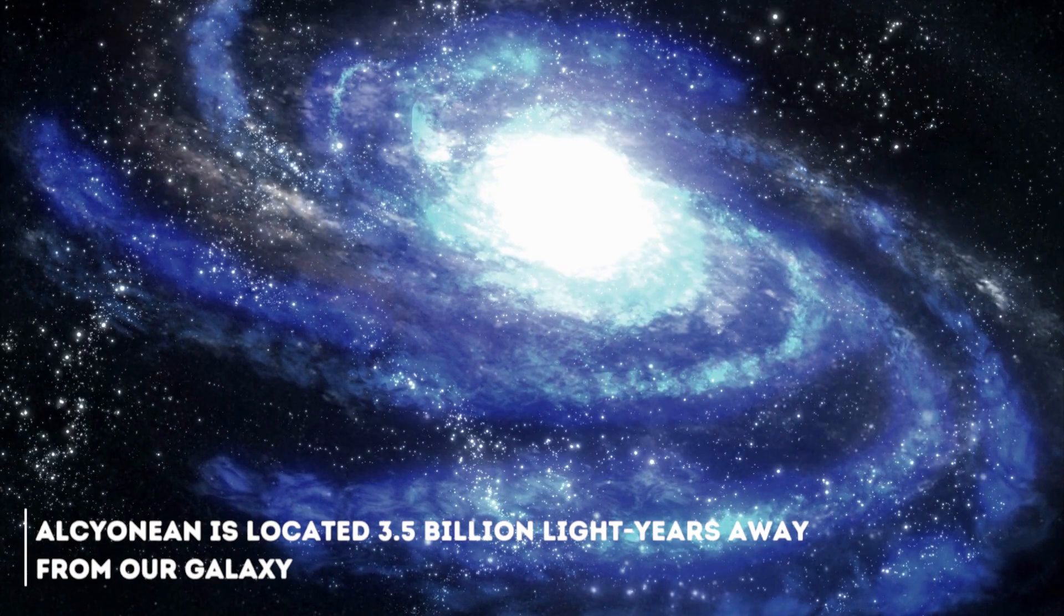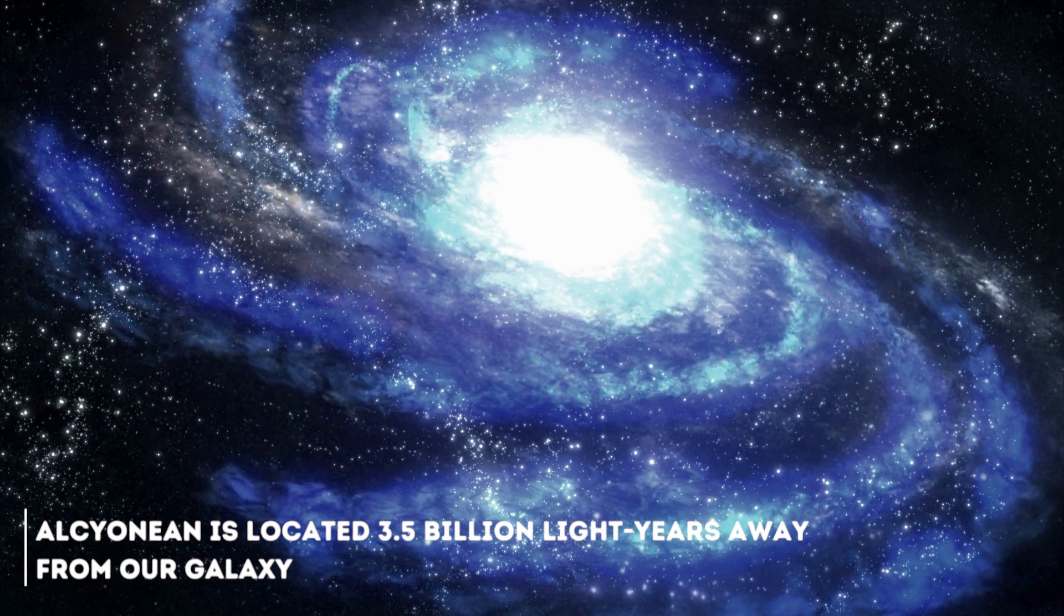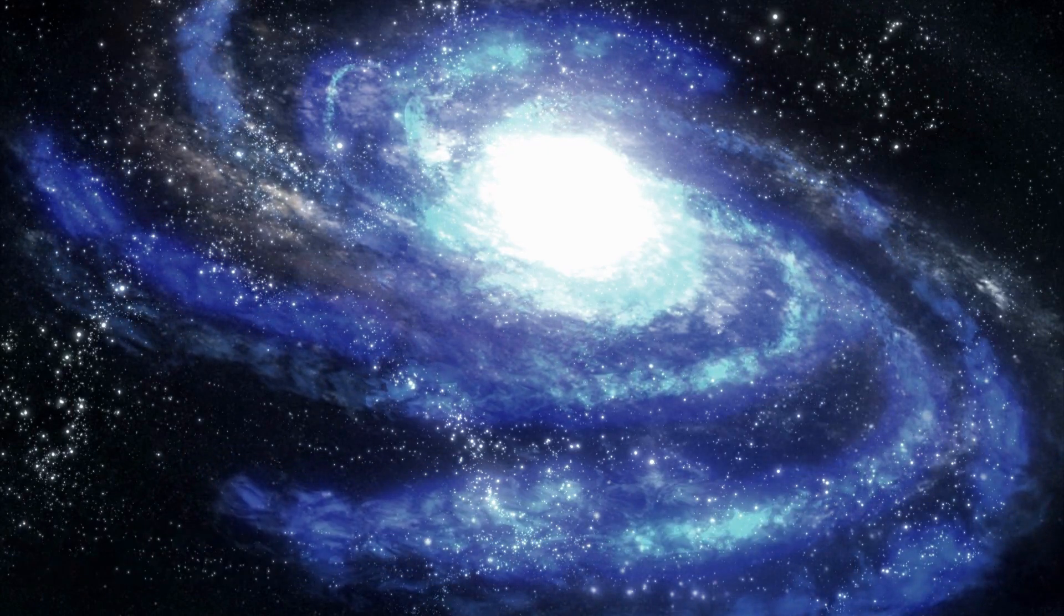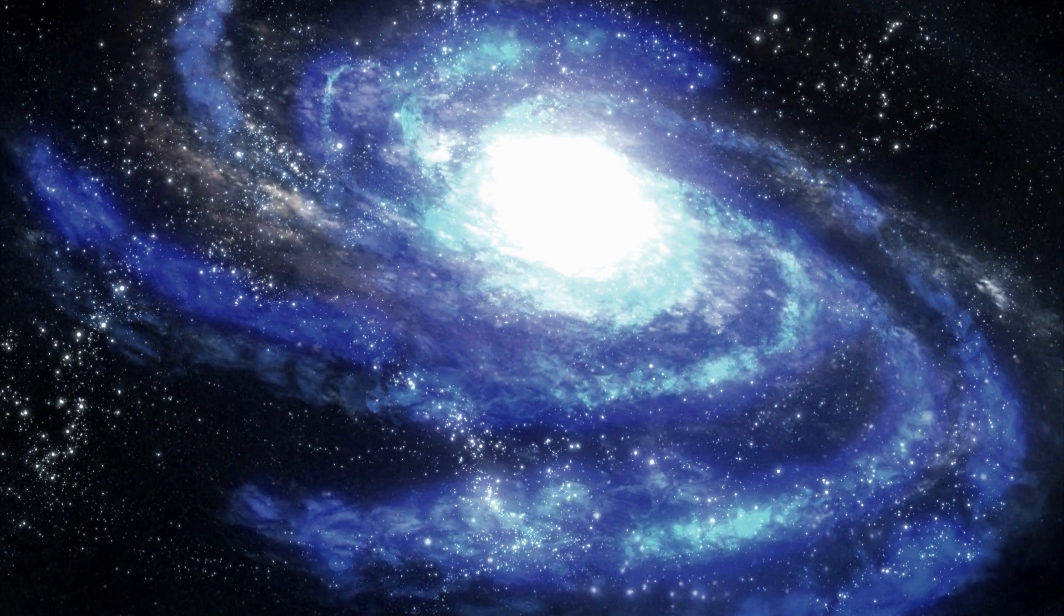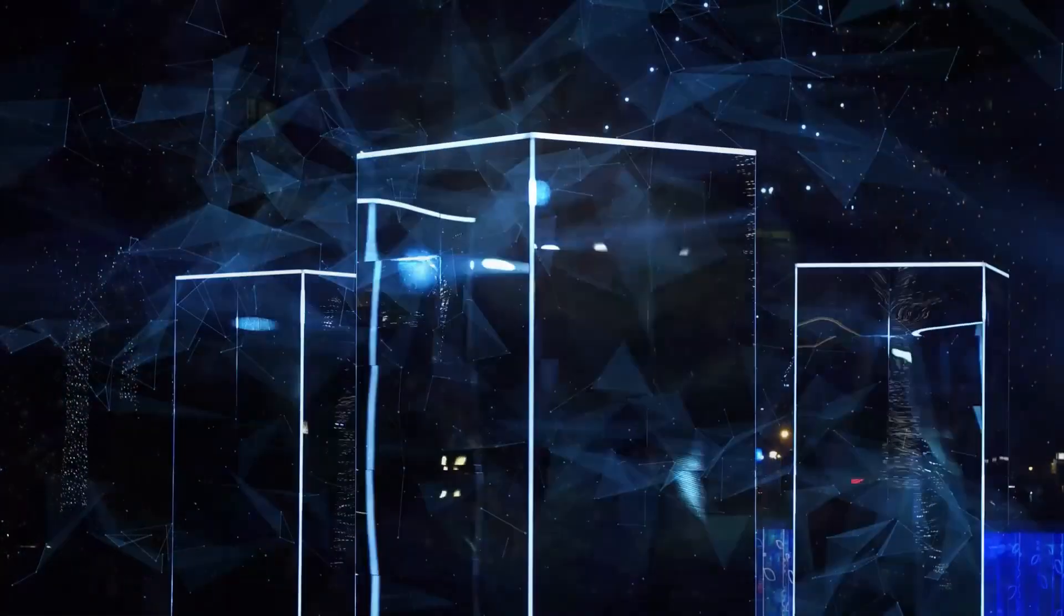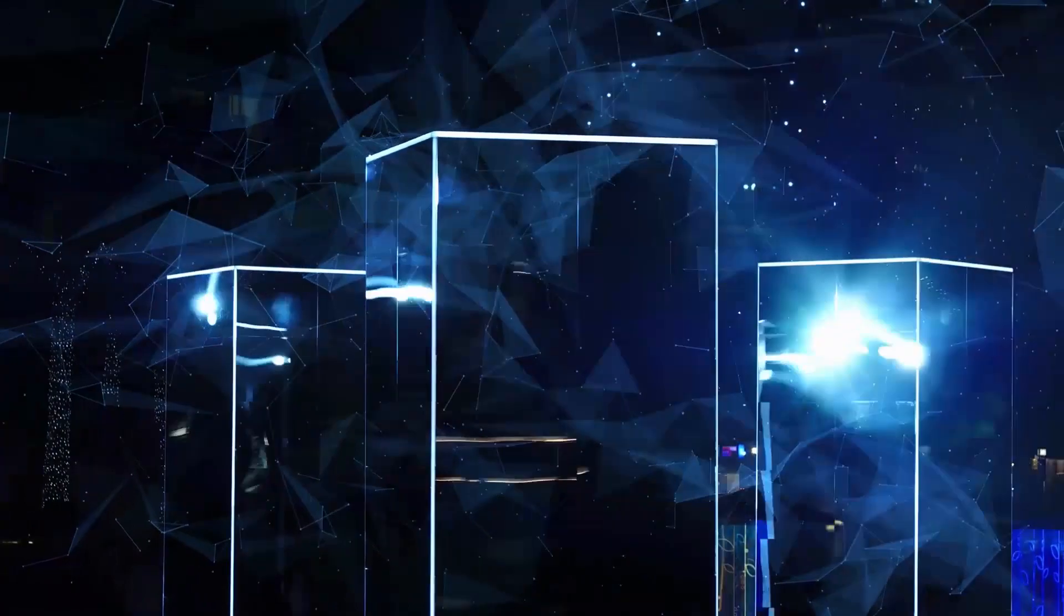Alcinean is located 3.5 billion light years away from our galaxy. According to several scientists, this galaxy is one of the strangest things ever found in our universe. The beginning of its history is complicated in itself.